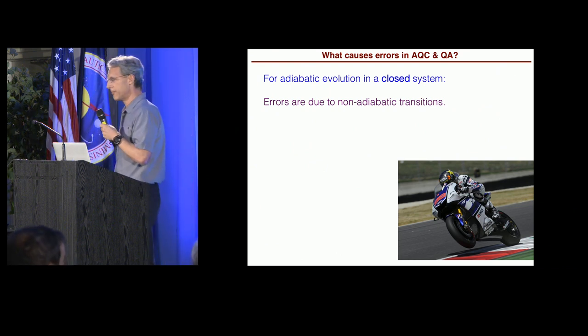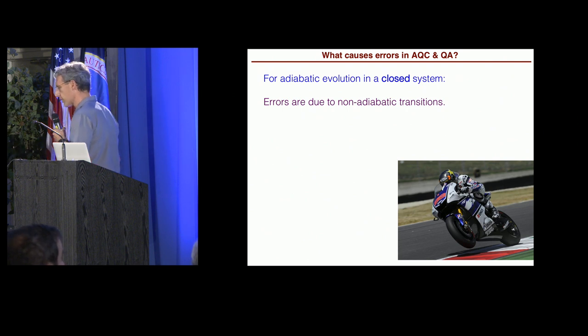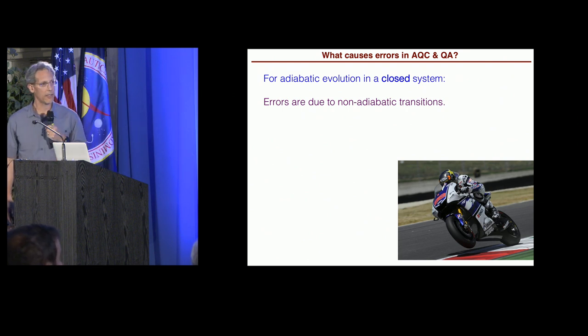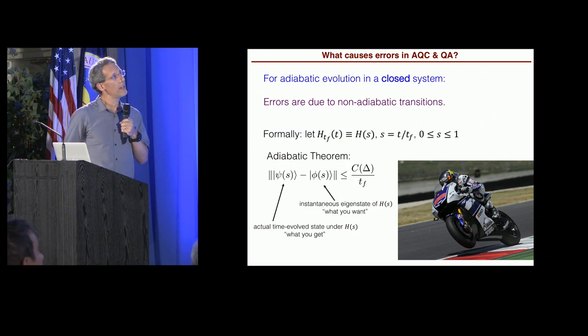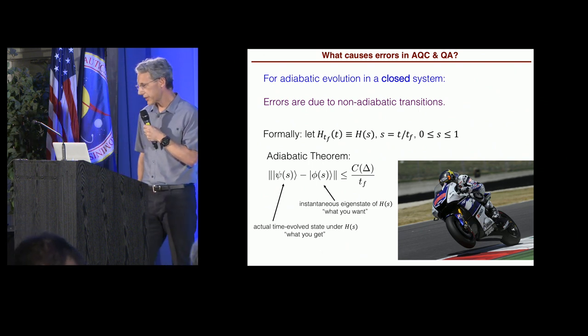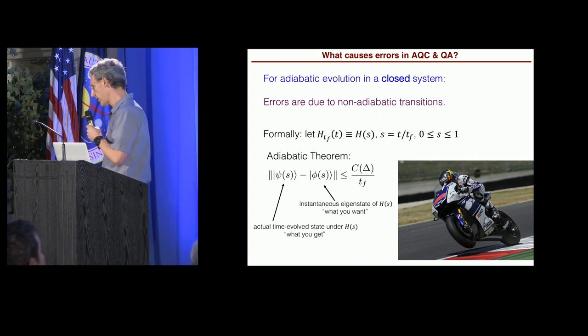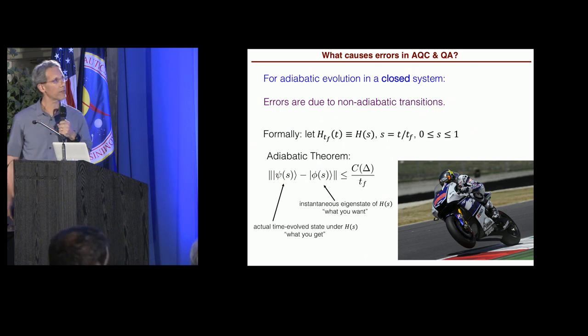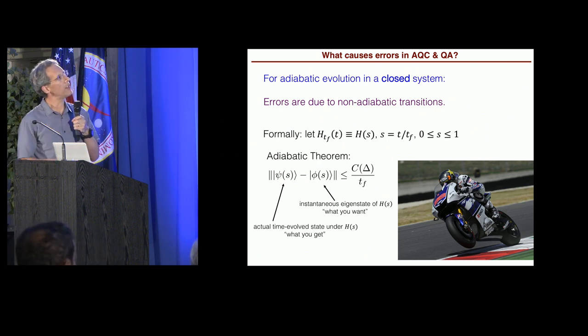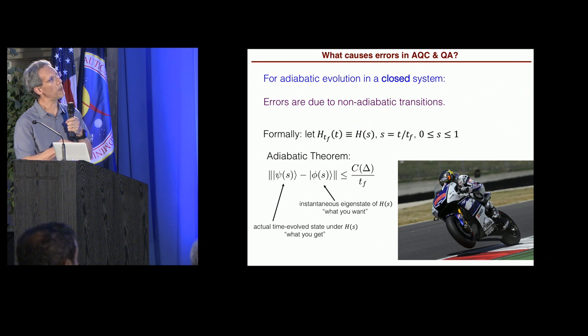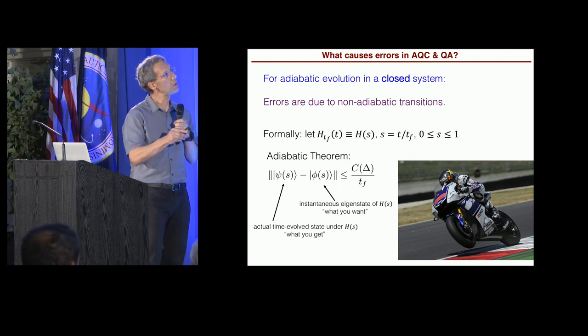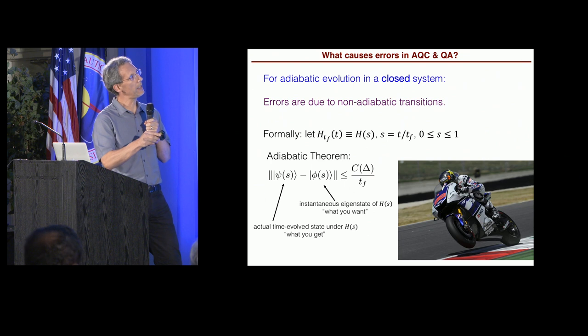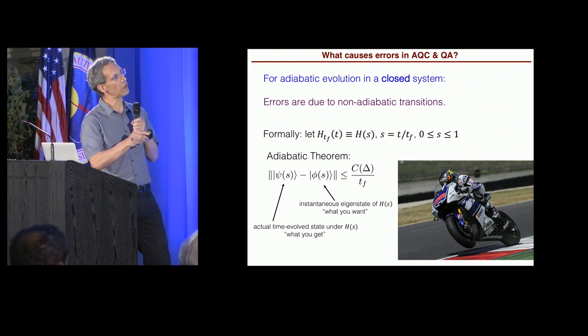So, again, to remind you, another type of error that occurs in AQC or in quantum annealing is diabatic excitations due to going too fast. Now, formally, we can quantify this effect using the adiabatic theorem. Let me present the version for closed systems first. All right. So the adiabatic theorem formulated for Hamiltonian that depends only on a dimensionless time parameter s says that the distance between the actual state, which is the state you actually get, and the desired state, the instantaneous eigenstate of the Hamiltonian, the thing you want,